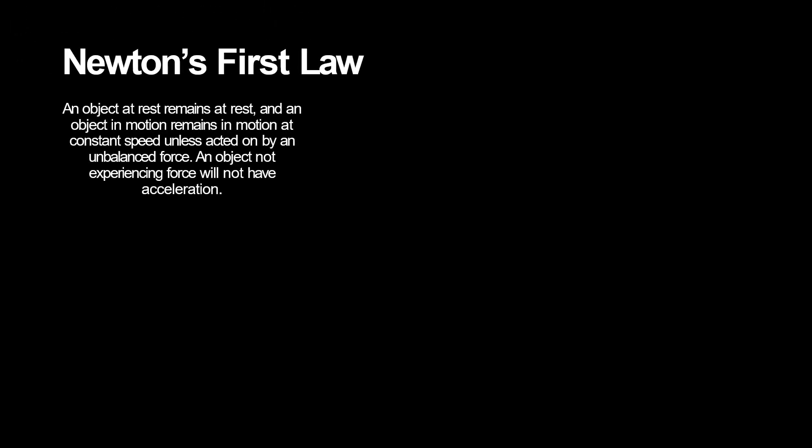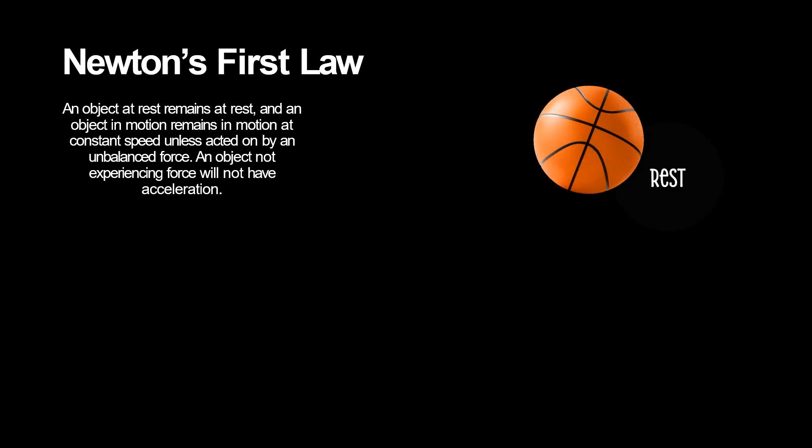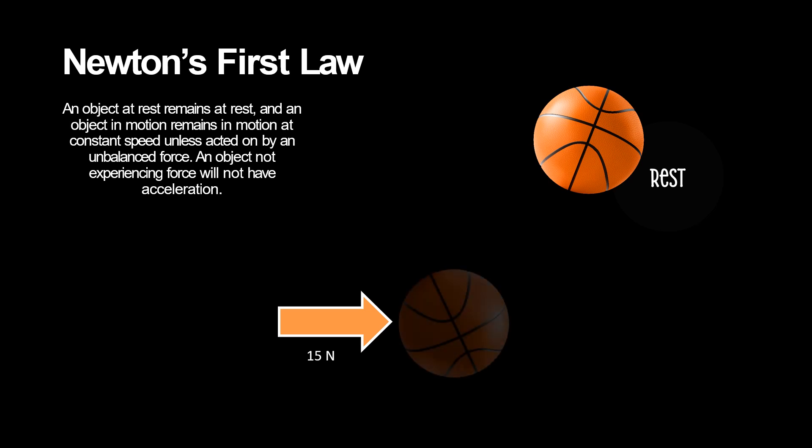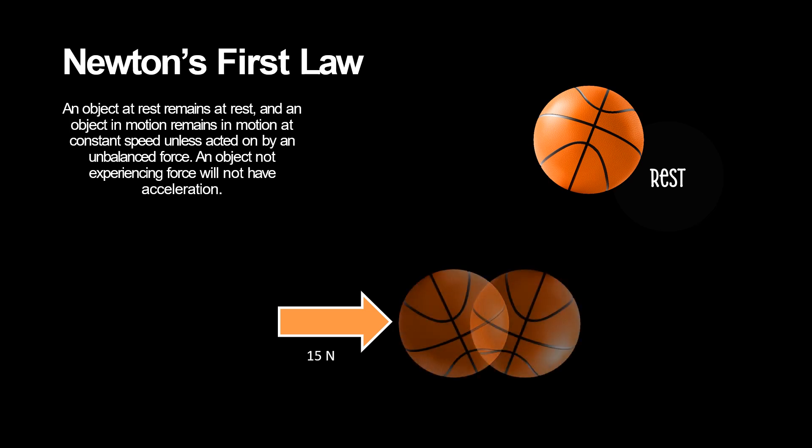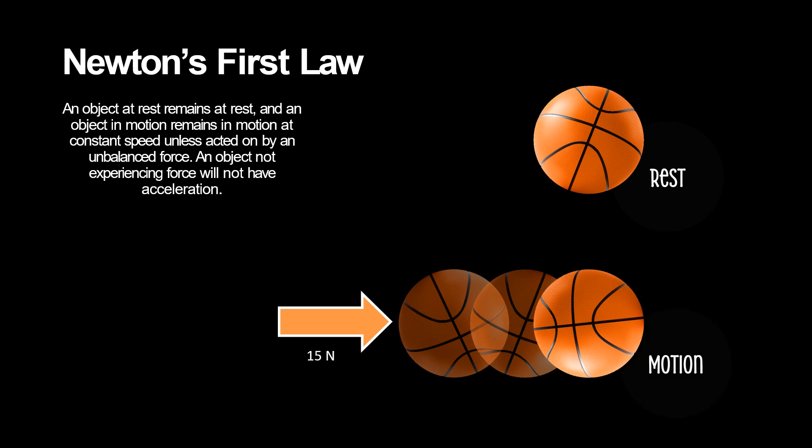Newton's first law states that an object in motion will stay in motion, while an object at rest will stay at rest, unless acted upon by an unbalanced force. What this means is that if an object is not moving, all the forces acting on it are balanced. If the object were at rest in a vacuum with no gravitational forces, then the object would have no forces acting on it. If an object is in motion, then it will remain in motion until another force changes its motion.